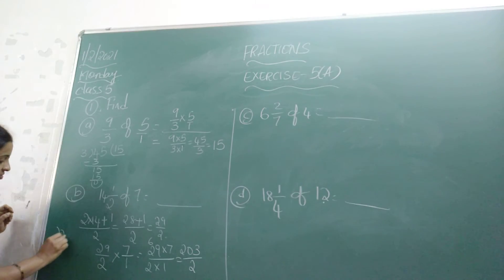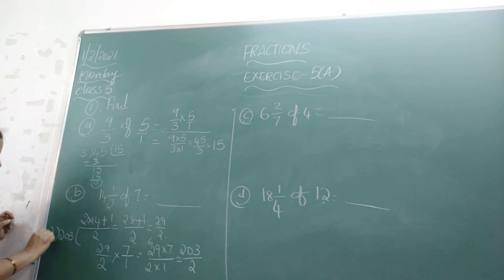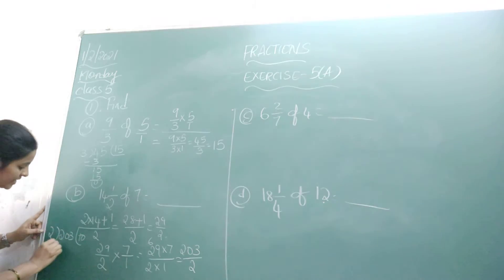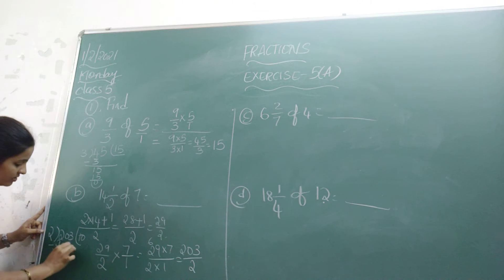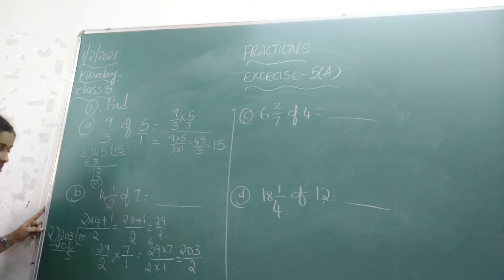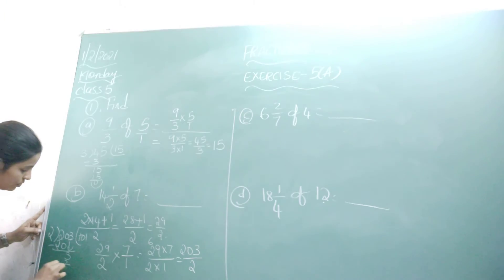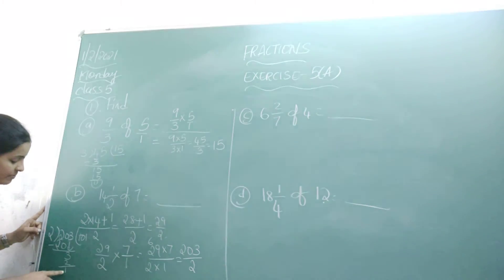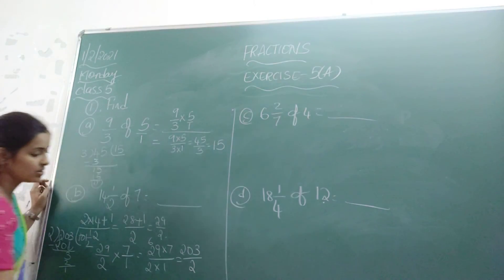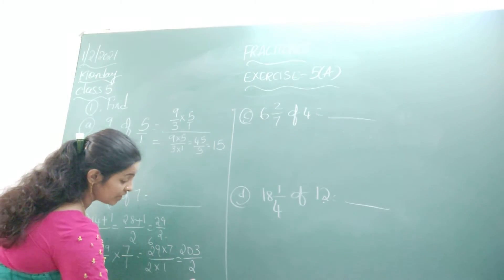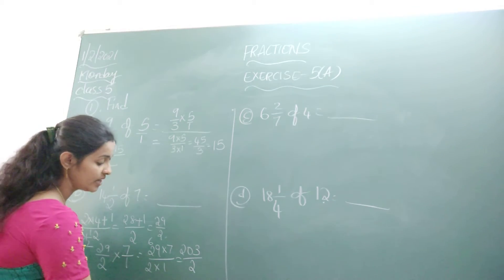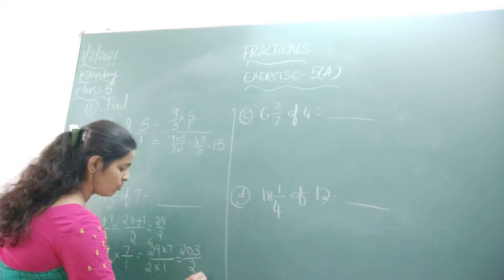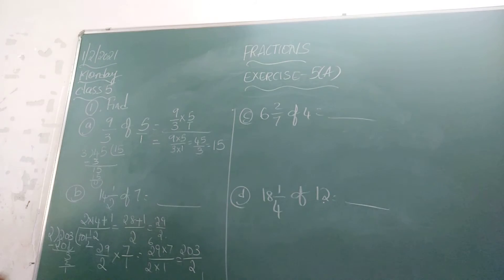Now let us divide 203 by 2. 2 tens are 20 — take that; drop the next digit, 3. 2 ones are 2, remainder 1. So write the remainder as 1 by 2. The value obtained is the mixed fraction 101 and 1 by 2. So this is the answer to the given problem.